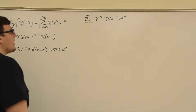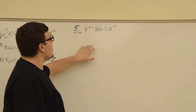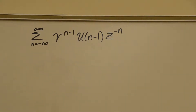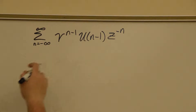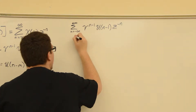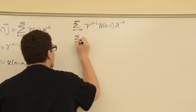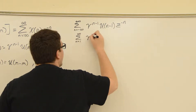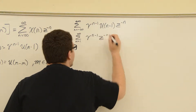The first thing we're going to do is get rid of this negative infinity to infinity, because we know that the function is 0 before n minus 1. If you plug in 0, you get the unit step function shifted to the right. So it becomes the sum from n equals 1 to infinity of gamma to the n minus 1, times Z to the minus n.